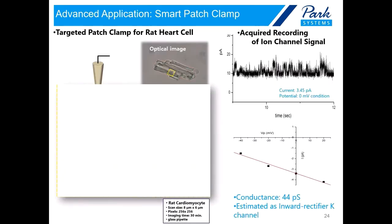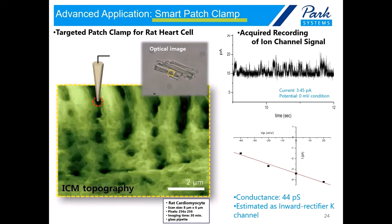In advanced applications, we can use SICM as a tool for smart patch clamp. In general, patch clamp experiments are conducted blindly without knowing the surface where the pipette lands. However, with SICM we can see the target area before attempting patch clamp, which gives tremendous advantages to researchers. Instead of using a micropipette with a 1-2 micrometer opening diameter typical for general patch clamp, we can use a nanopipette with an opening diameter of approximately 100 nanometers, giving higher resolution for ion channel mapping.